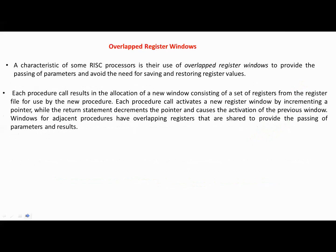A characteristic of some RISC processors is their use of overlapped register windows to provide the passing of parameters and avoid the need for saving and restoring register values. Each procedure call results in the allocation of a new window consisting of a set of registers from the register file for use by the new procedure. Each procedure call activates a new register window by incrementing a pointer while the return statement decrements the pointer and causes the activation of the previous window. Windows for adjacent procedures have overlapping registers that are shared to provide the passing of parameters and results.